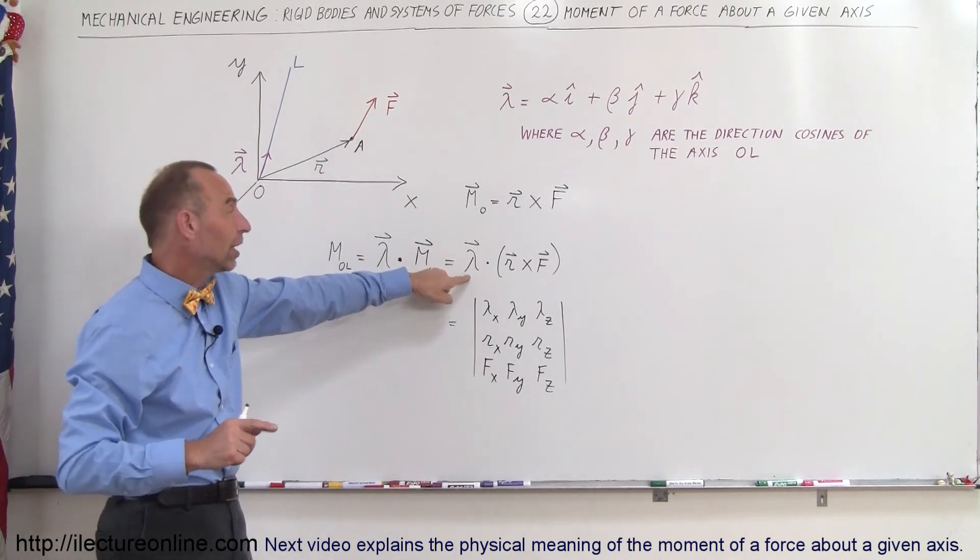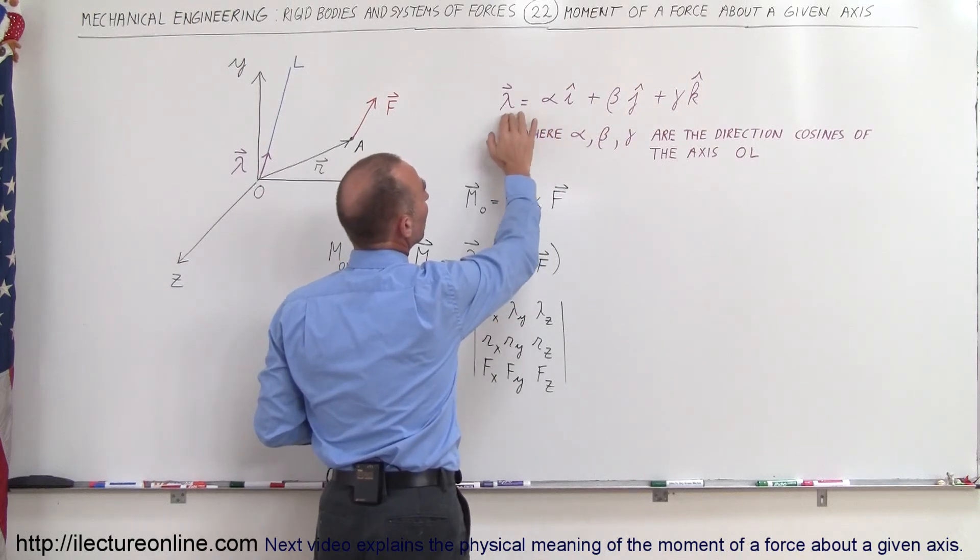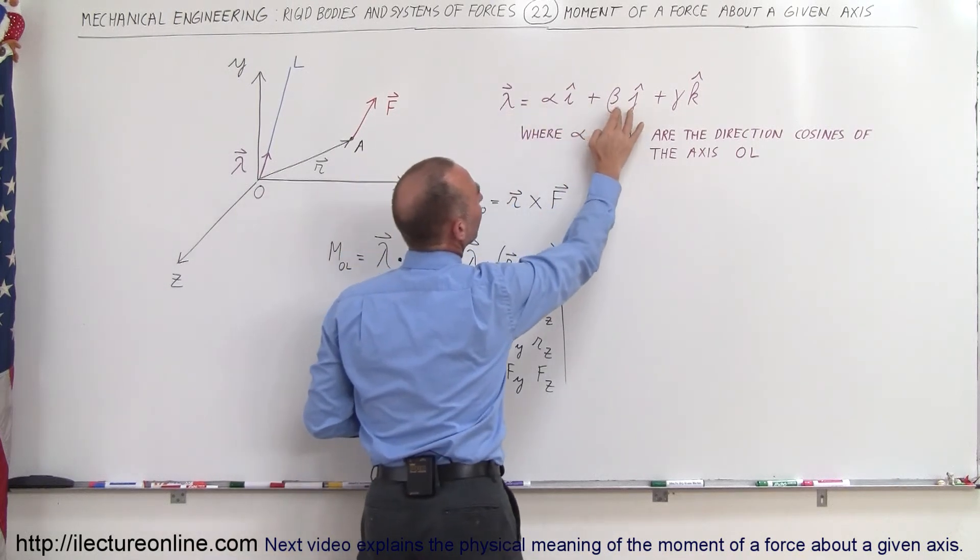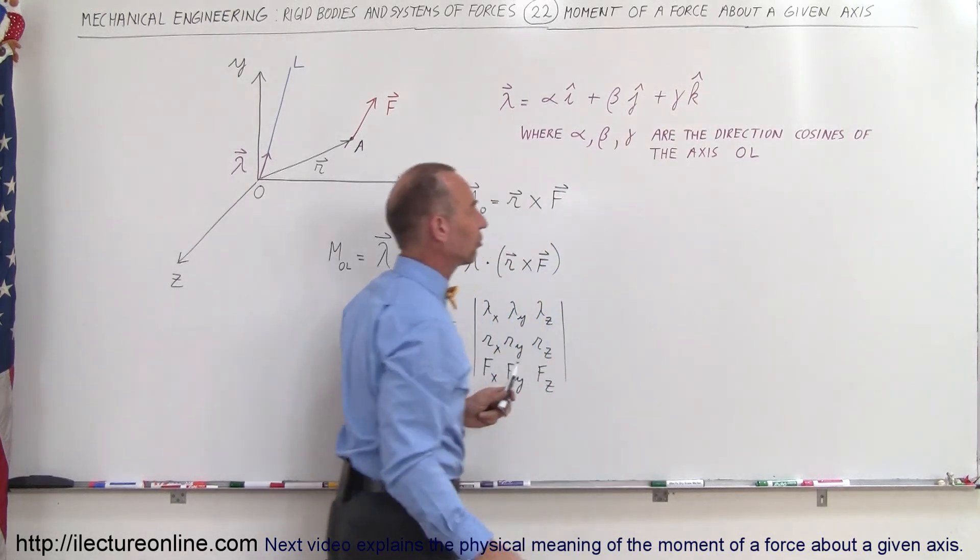This is the magnitude of the moment about the arbitrary axis going through the origin. Lambda is the unit vector in the direction, and another way of writing lambda is: lambda equals alpha i plus beta j plus gamma k, where alpha,